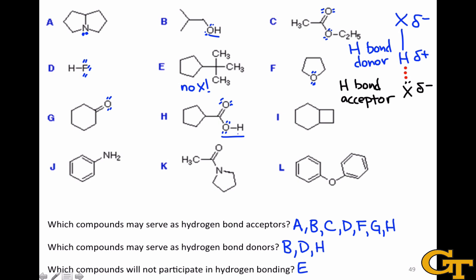Molecule I includes no heteroatoms, and so a lot like case E, this molecule cannot engage in hydrogen bonding at all. Molecule J includes a nitrogen with one lone pair, and so it can serve as a hydrogen bond acceptor. It also includes nitrogen-hydrogen bonds, which can act as hydrogen bond donors. So molecule J needs to go on our list of hydrogen bond donors.